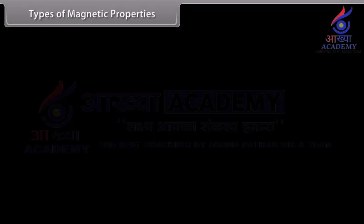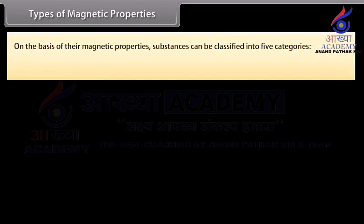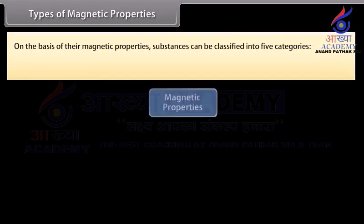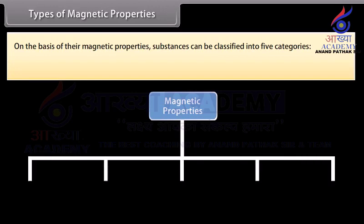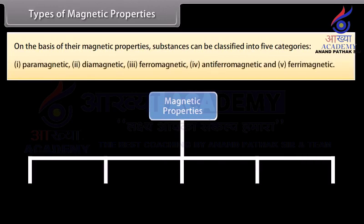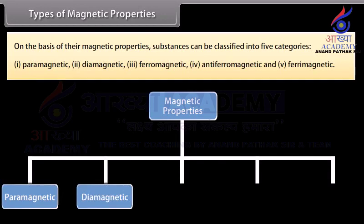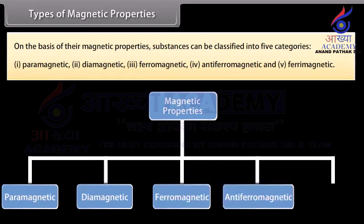Types of magnetic properties: On the basis of their magnetic properties, substances can be classified into five categories: 1. Paramagnetic, 2. Diamagnetic, 3. Ferromagnetic, 4. Antiferromagnetic, and 5. Ferrimagnetic.